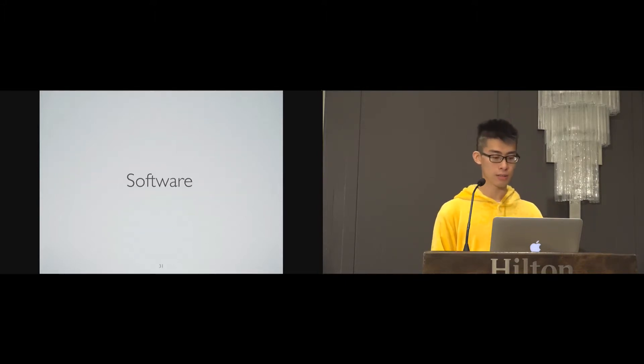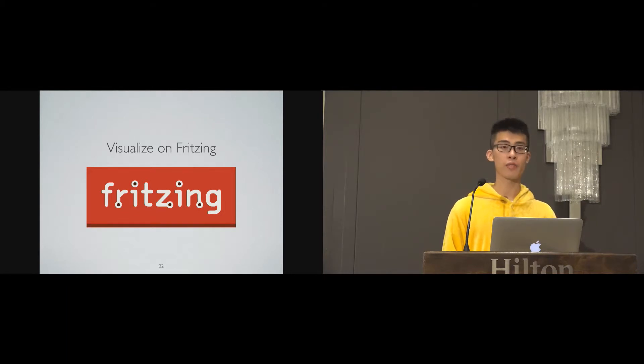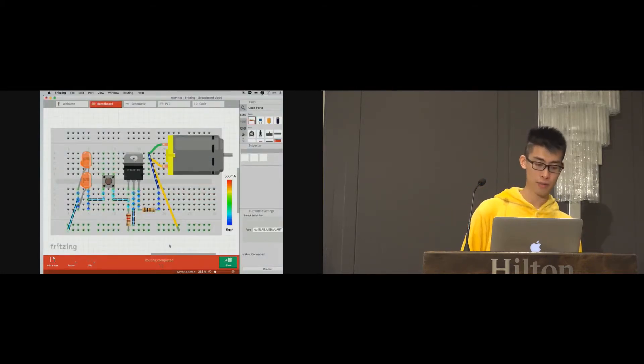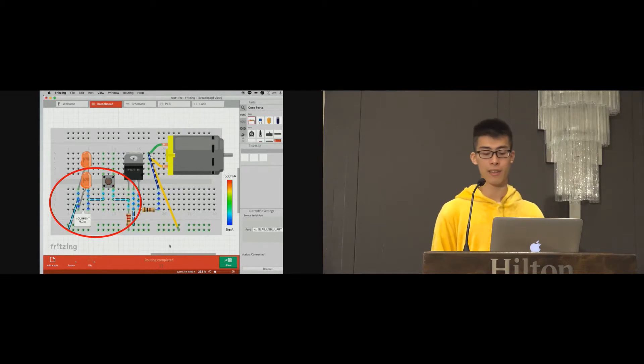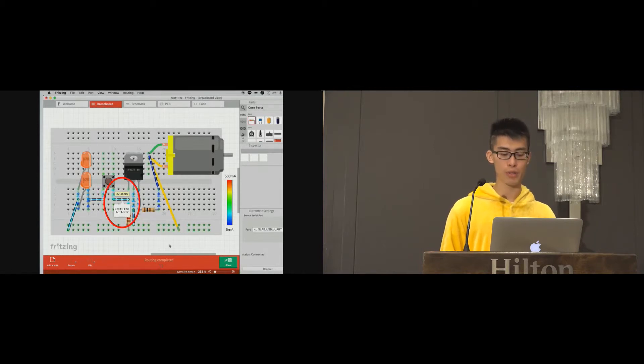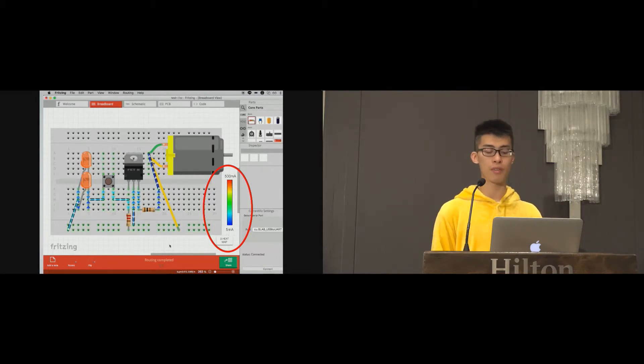Then we enter the software part. We choose Fritzing for current visualization because it is one of the most popular software in open source community. Here is our design interface. First, there are current flows displayed in real time because we can keep tracking them on our modified breadboard. Second, the actual value of amperage will pop up by mouse cursor hovering. It can be used not only for debugging but for educational use to novices, understanding what current acts like. Third, there is a heat map for better understanding the approximate current if you don't want to hover cursor on it.